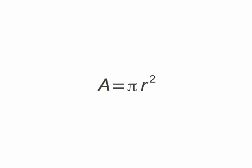To find the area of a circle, square the radius and multiply it by pi.